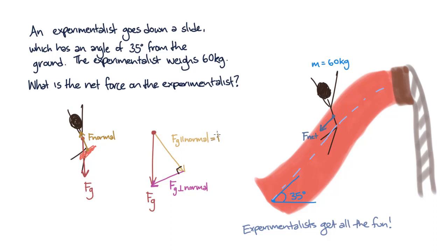So we know that the normal force from the slide cancels out the component of gravity parallel to this normal force, which is perpendicular to the slide's surface. This means that the net force on the experimentalist is entirely the component of gravity perpendicular to the normal force, which is parallel to the slide's surface.